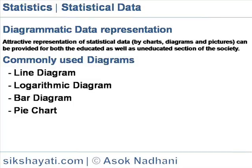Divided bar charts or percentage bar diagrams are used for comparing different components of a variable and also relating the components to the whole. Pie chart: Pie diagrams are circular diagrams in which the whole area represents the aggregate, and the circle is divided into various parts to represent the components of the whole.